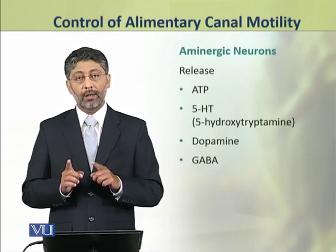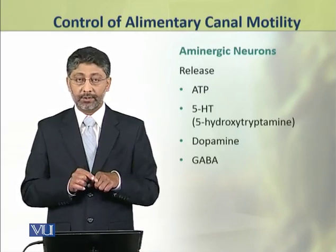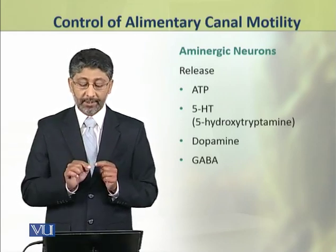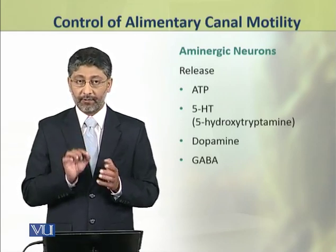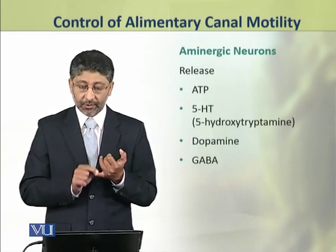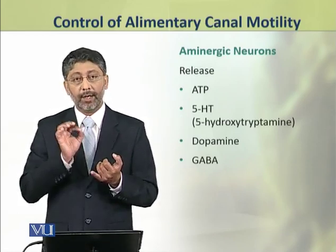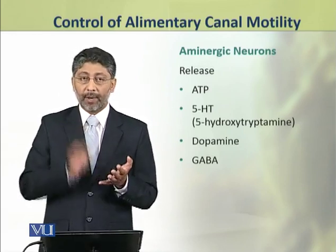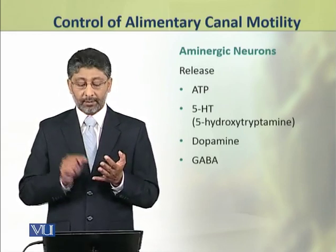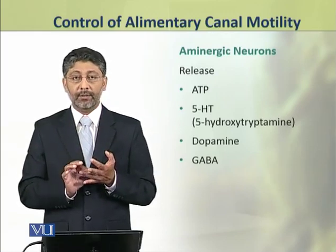Now we shall discuss the innervations of aminergic neurons, which release from their nerve endings ATP, 5-HT (that is 5-hydroxytryptamine), dopamine, and gamma-aminobutyric acid (GABA).